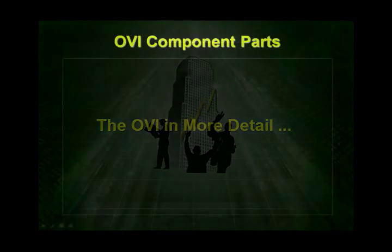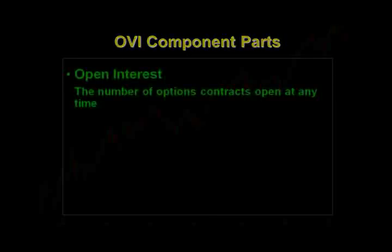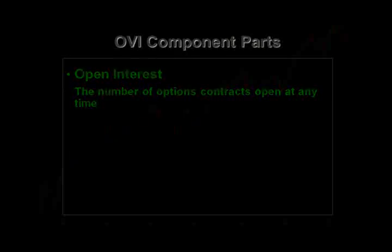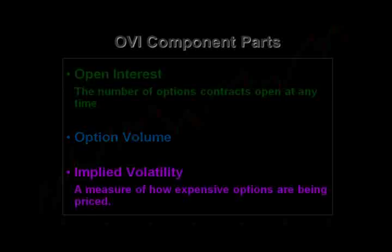Let's start by going through the component parts of the OVI. It's important to remember, don't get frightened by any of these terms even if they're new to you. The first component part is open interest, which represents the number of options contracts that are open at any time. The next component part is option volume, representing the number of option contracts being traded between buyers and sellers every day. And the final component part is implied volatility — a measure of how expensive options are being priced in the markets.